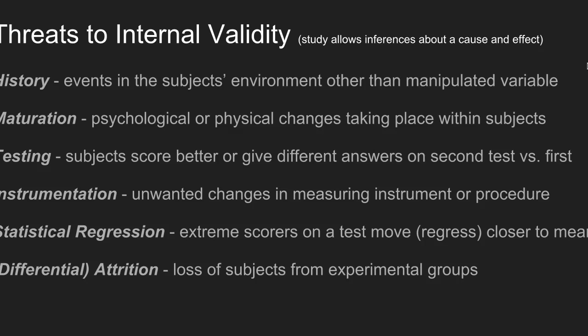Another important threat to internal validity is the loss of subjects from experimental groups. This is particularly problematic when attrition — the loss of subjects — occurs differentially between study groups, such that control group participants are more likely to drop out than experimental group participants. Differential attrition can be a major threat to internal validity.